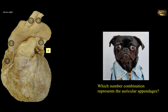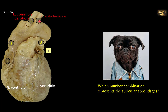Which number combination represents the auricular appendages? The auricle in Latin refers to the ear. The specimen on the left shows an anterior view of a plastinated heart showing mainly the right and left ventricles. The great vessels can be identified: 3 is the left common carotid artery, the second branch of the arch of the aorta; 4 is the left subclavian artery; 2 is the ascending aorta; and 5 is the left pulmonary artery. The right auricular appendage, 1, overlies the commencement of the aorta and the right part of the atrioventricular groove, which contains the right coronary artery.